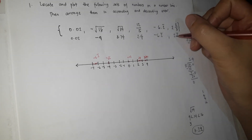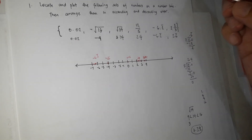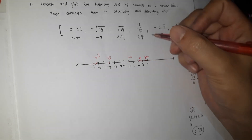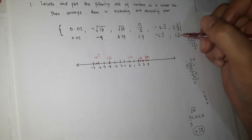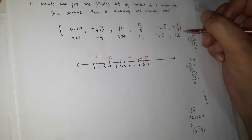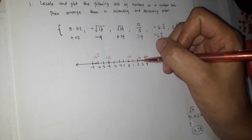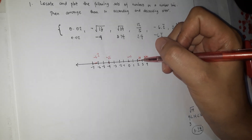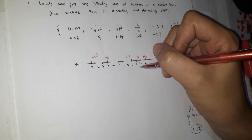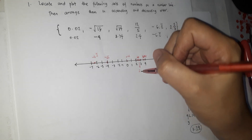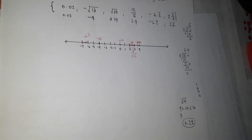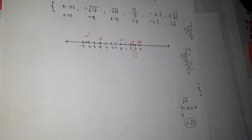For 2.6 bar — since 2 and 2 thirds equals 2.6 bar, it falls between the 6th and 7th marks between 2 and 3 on the number line. We plot it there. We've now placed all six numbers.